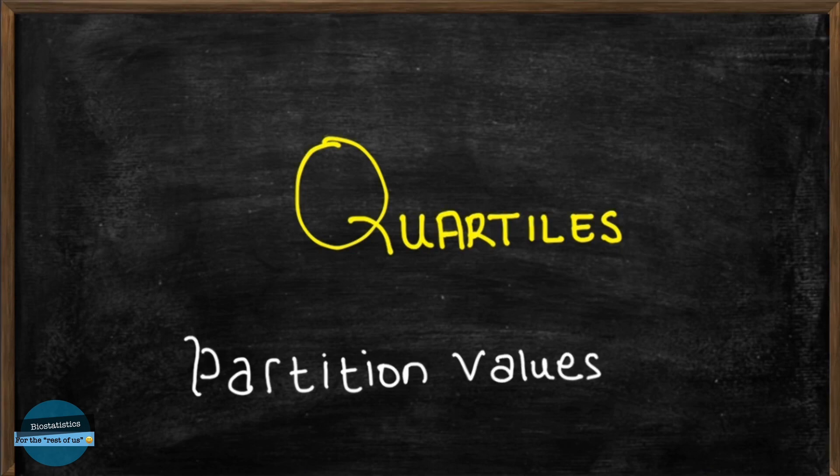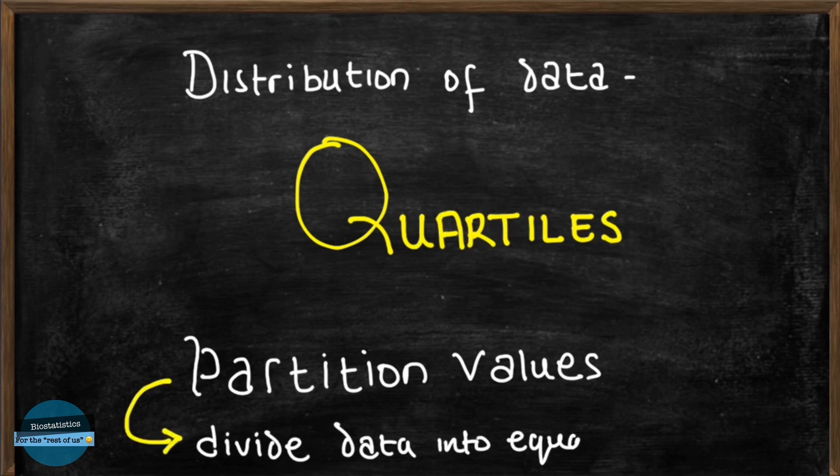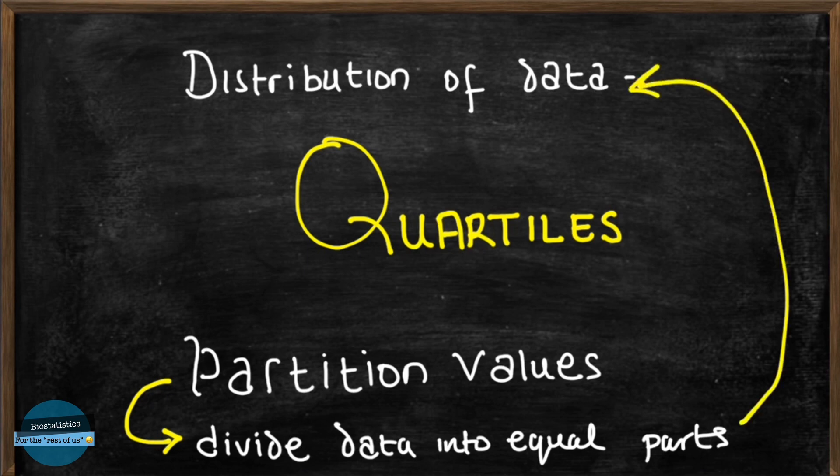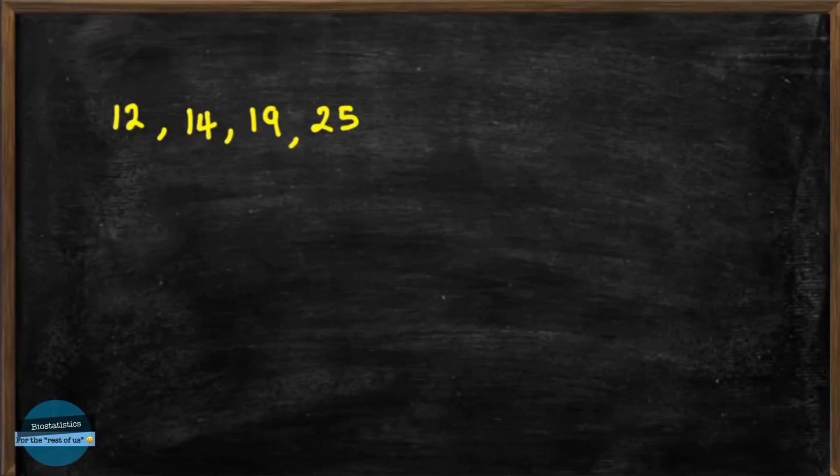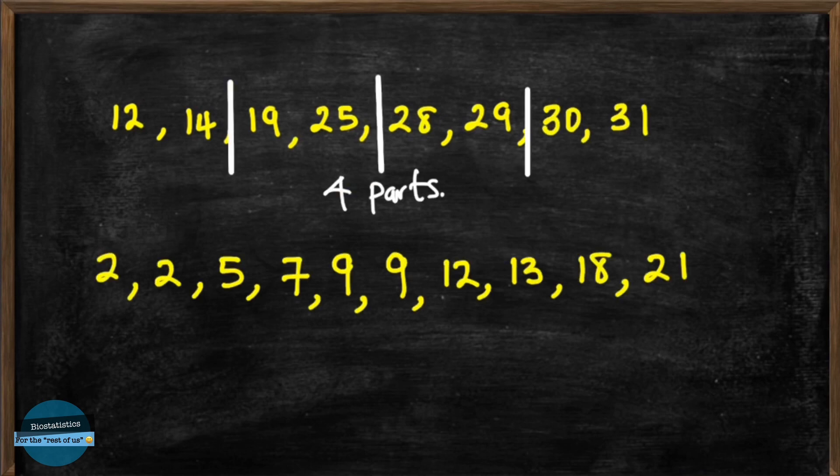One important thing we do when we have a data set is to try to understand the distribution of the data. Partition values are statistical measures used to divide a data set into equal parts. These partition values are useful in statistics to understand how the data is distributed. If we have a data set and we want to divide it into let's say four equal parts or ten equal parts,